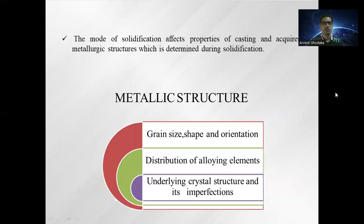The mode of solidification affects the properties of casting and acquires a metallurgical structure which is determined during solidification. The metallic structure includes grain size, shape, and orientation of the grains, the distribution of alloying elements, and the underlying crystal structure and its imperfections.